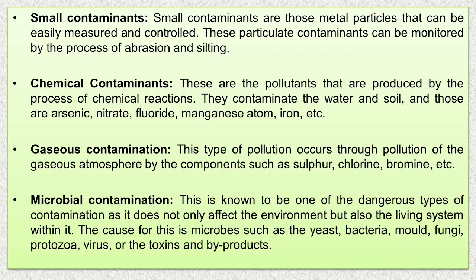Chemical contaminants are those pollutants which are produced by the process of chemical reaction, causing water and soil pollution. Examples include arsenic, nitrate, fluoride, manganese, iron, etc. Gaseous contaminants arise from pollution of the gaseous atmosphere by components such as sulfur, chlorine, bromine, etc.